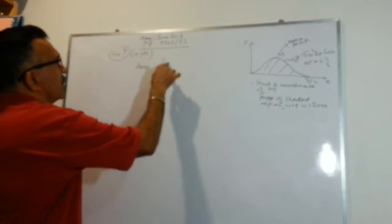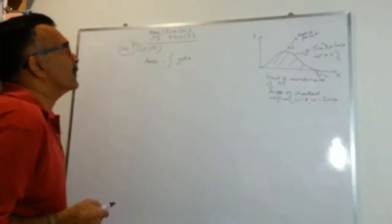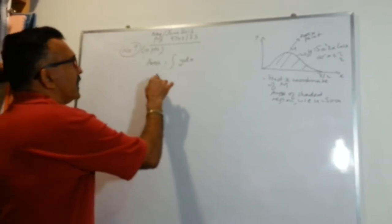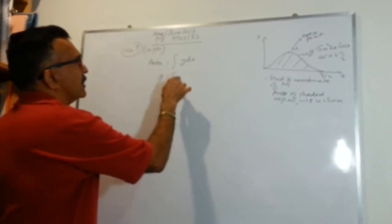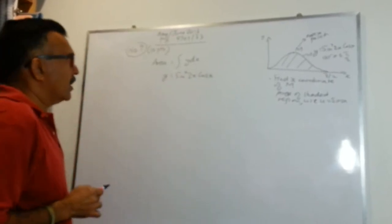Area will be equals to the integral of y dx. So we know that y is sin squared 2x cos x. That's good.